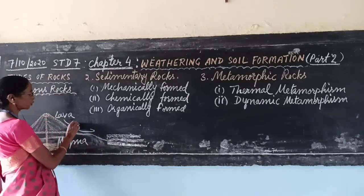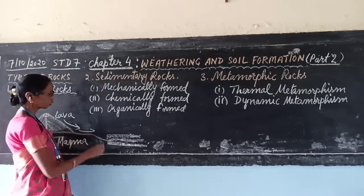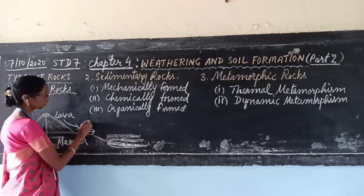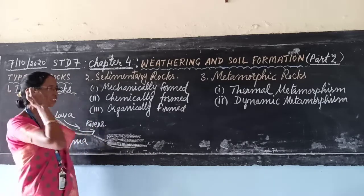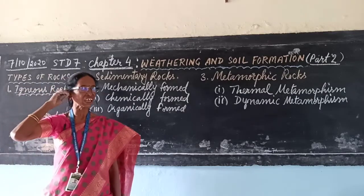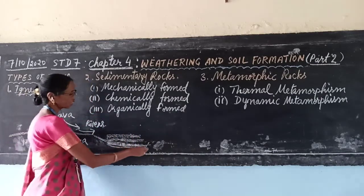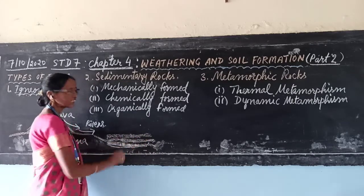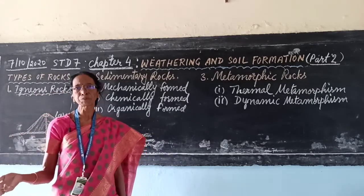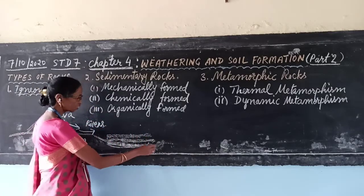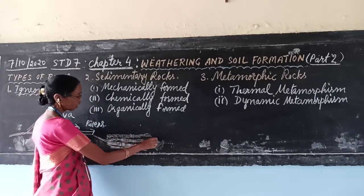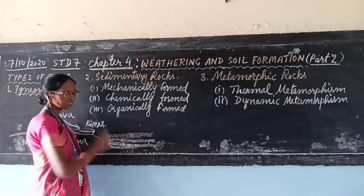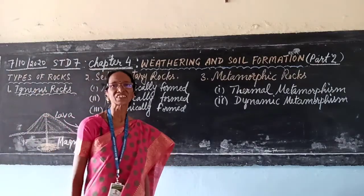These particles are transported by the rivers to the low-lying areas. Through the rivers, when they are transported to the low-lying areas, they are deposited in layers. It takes a long period of time to make one layer, and then other layers form on top, then a third layer, and so on. Like that, they are formed over many years.